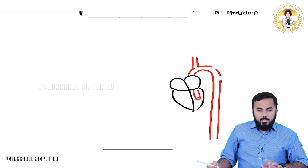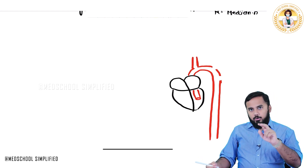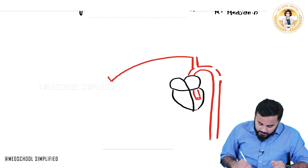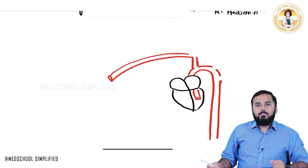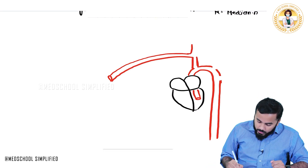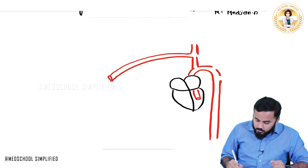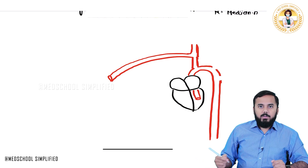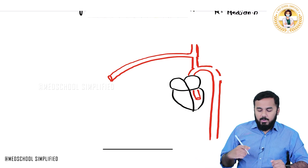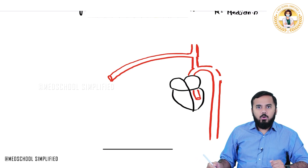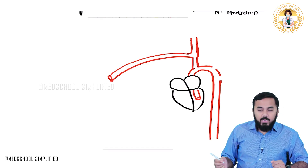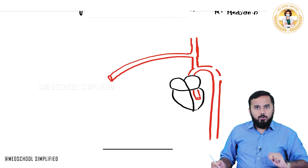The brachiocephalic trunk will divide into two branches. One branch going to the right side is called the subclavian artery, and one branch going up is called the common carotid artery. This common carotid artery will in turn divide into two branches.